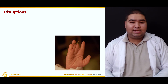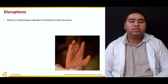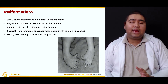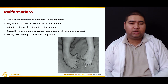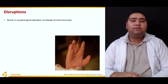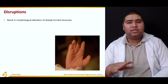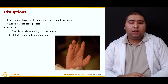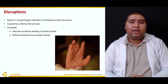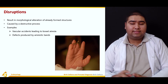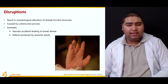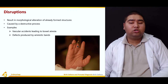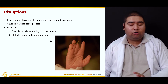What are disruptions? These result in morphological alteration of an already formed structure. Unlike malformations, which alter configuration during formation, in disruptions the structure has already been formed but then undergoes a destructive process. Examples include vascular accidents that may lead to bowel atresia, and defects produced by amniotic bands. In the figure, you can clearly see amniotic band syndrome causing banding of the fingers, resulting in improper formation of an already normal finger.